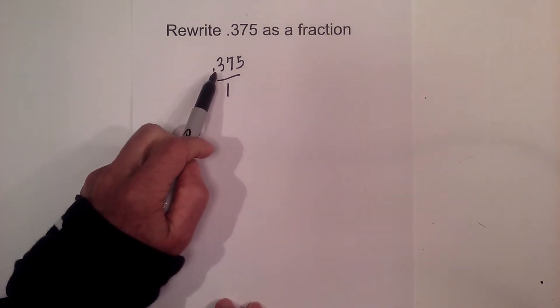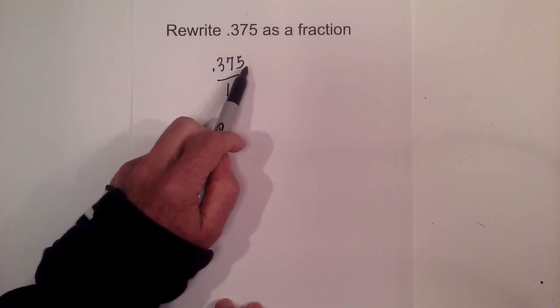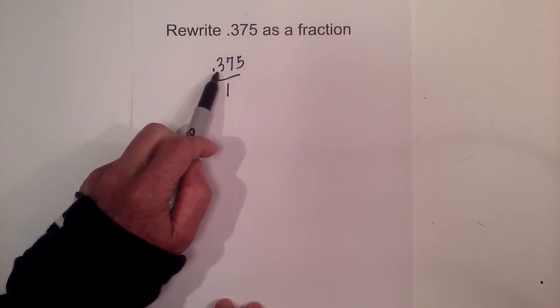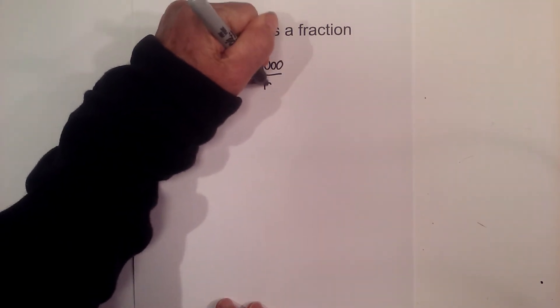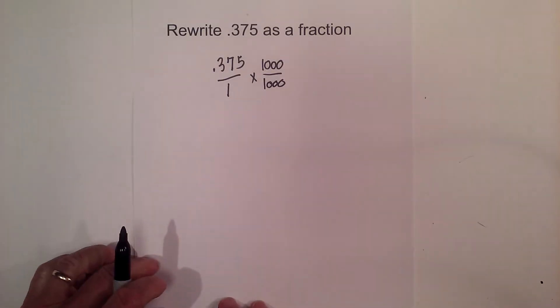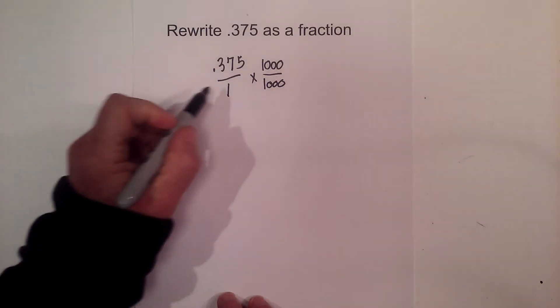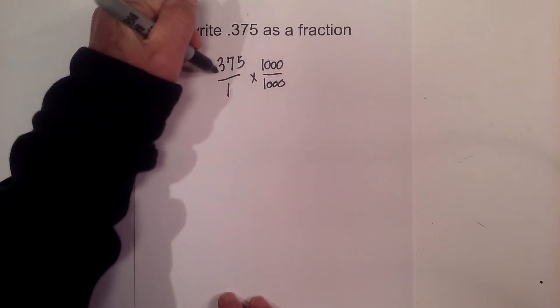Step 2 is I'd like to move the decimal all the way to the right. So I need to move it three places to the right. And I can do this by multiplying the numerator and denominator by 1000. When I multiply 0.375 times 1000,